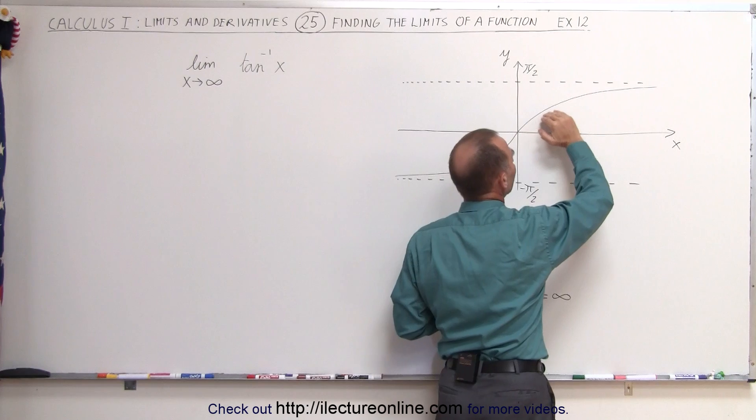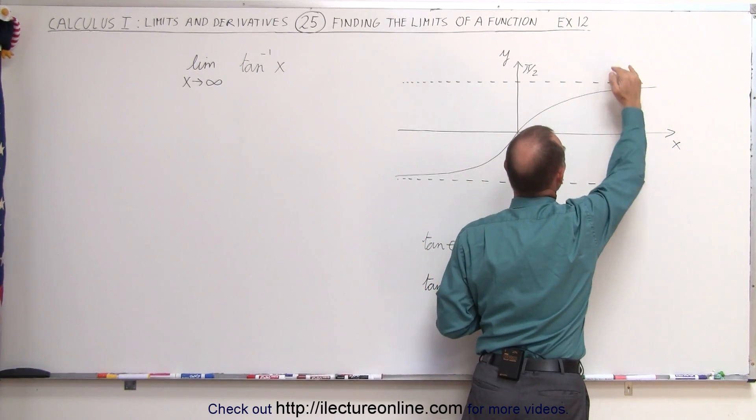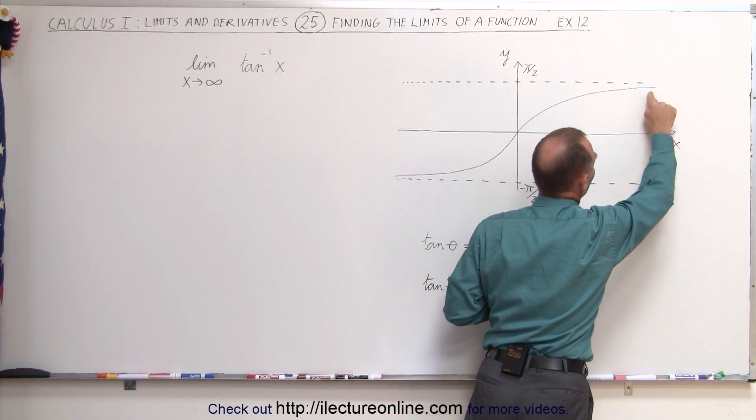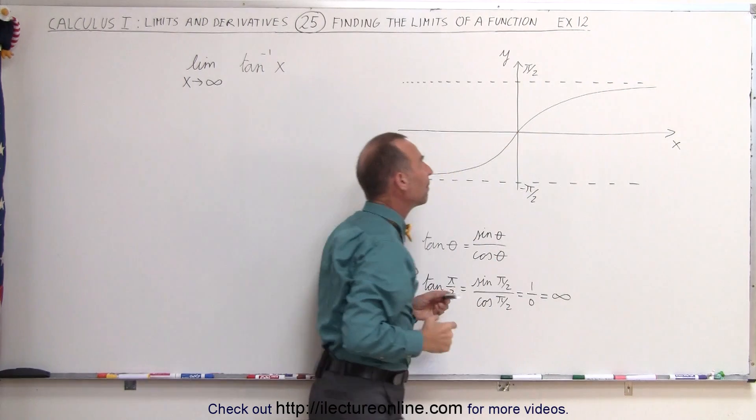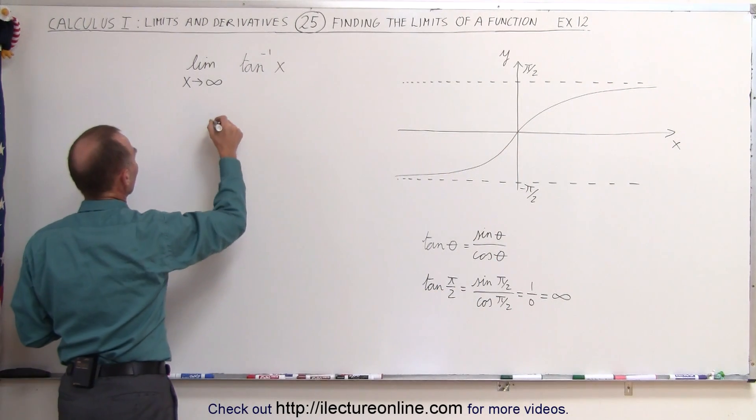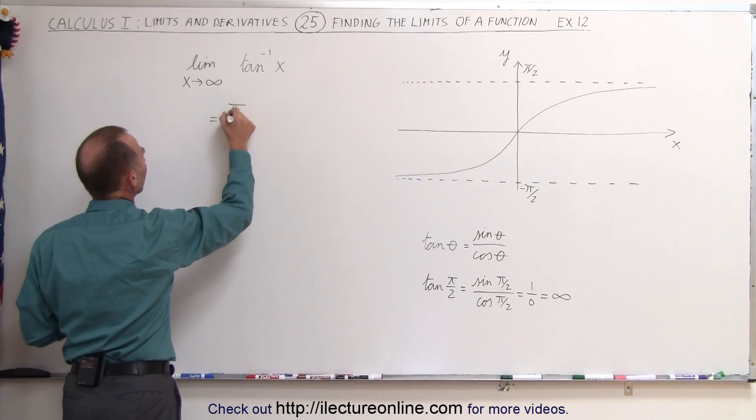You can see here with this graph that it gets closer and closer to pi over 2. And in the limit, as x becomes infinity, the value will be pi divided by 2. So we can say that this must therefore equal pi divided by 2.